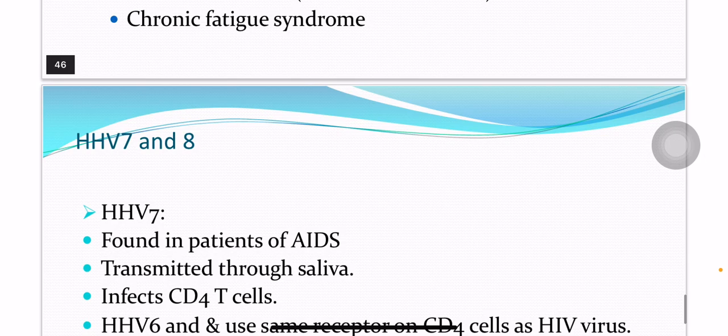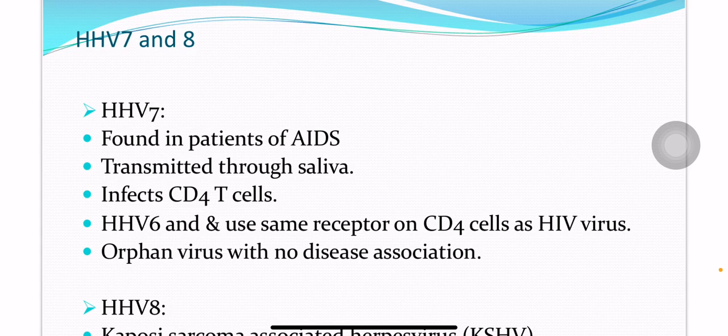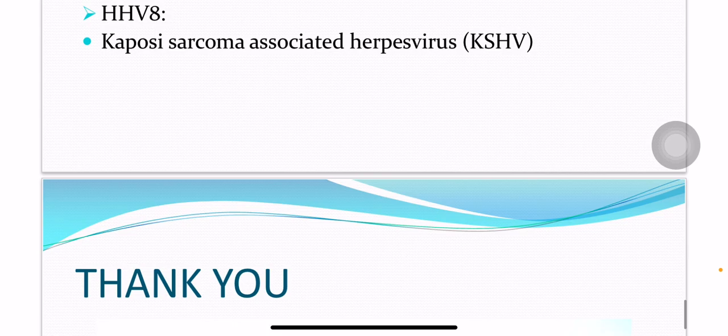HHV7 and HHV8: HHV7 is found in patients with AIDS and is transmitted through saliva, infecting CD4 T cells. HHV6 and HHV7 use the same receptors on the CD4 cells as HIV. HHV7 is also known as an orphan virus because no disease association has been found to date. HHV8 is the Kaposi's sarcoma-associated virus.